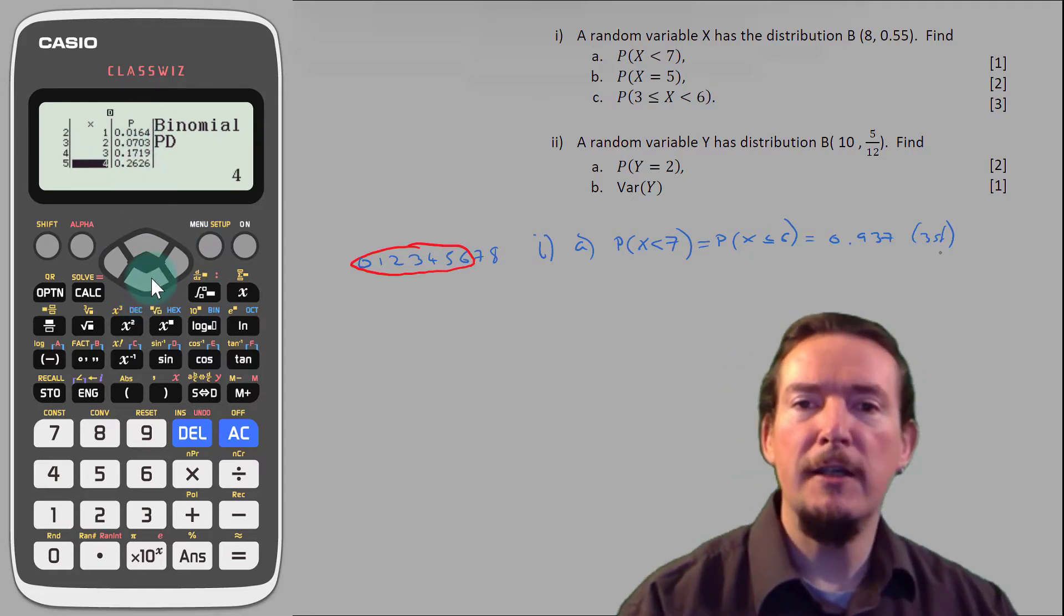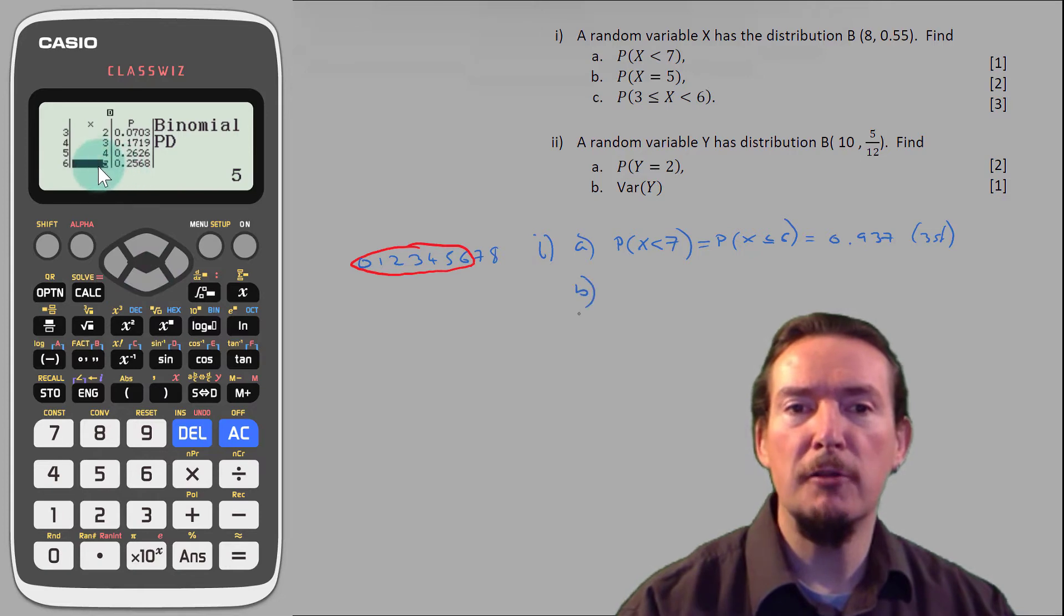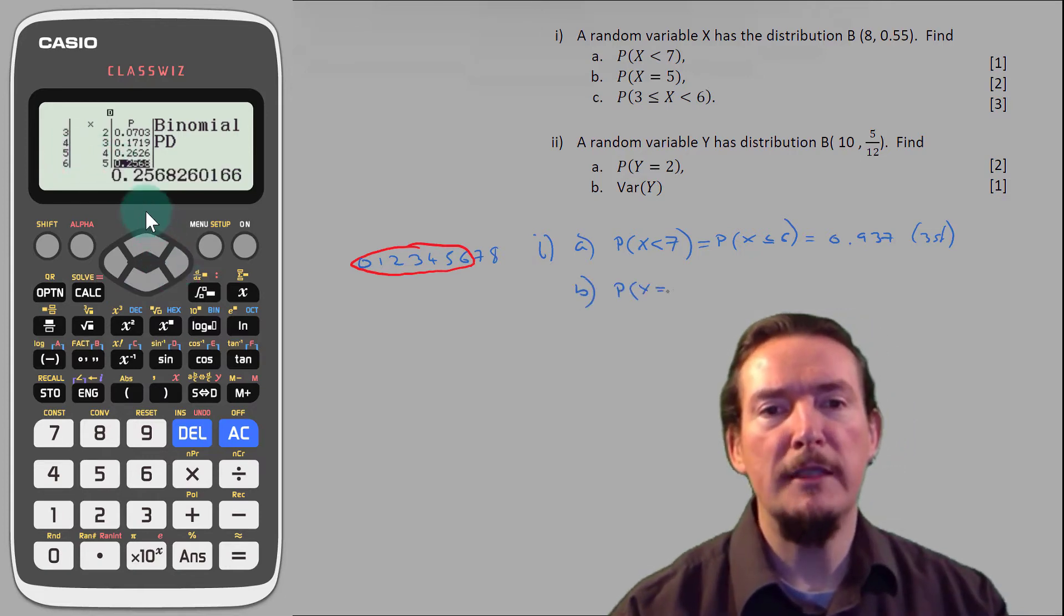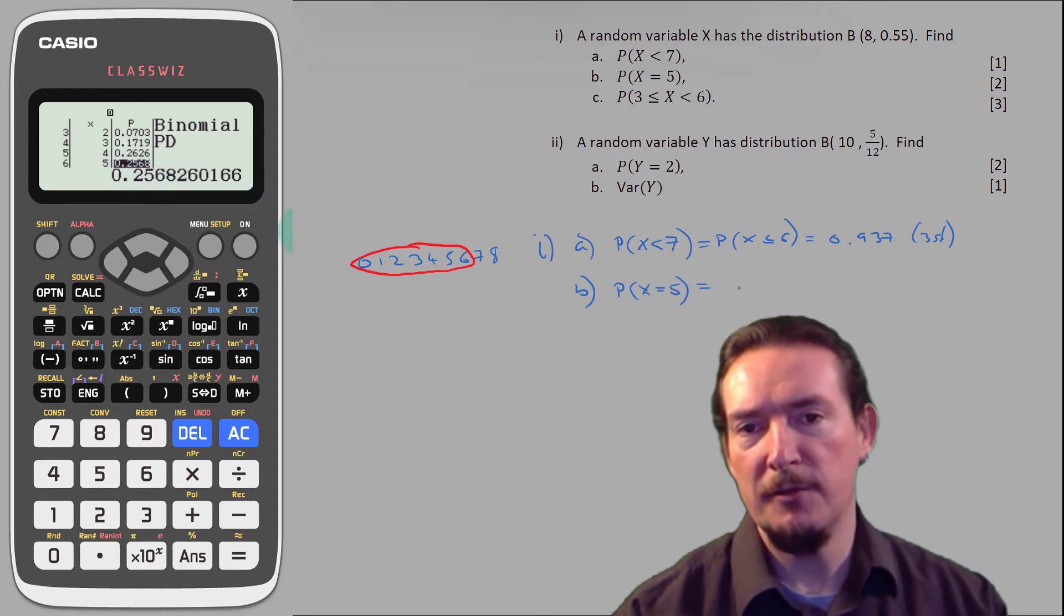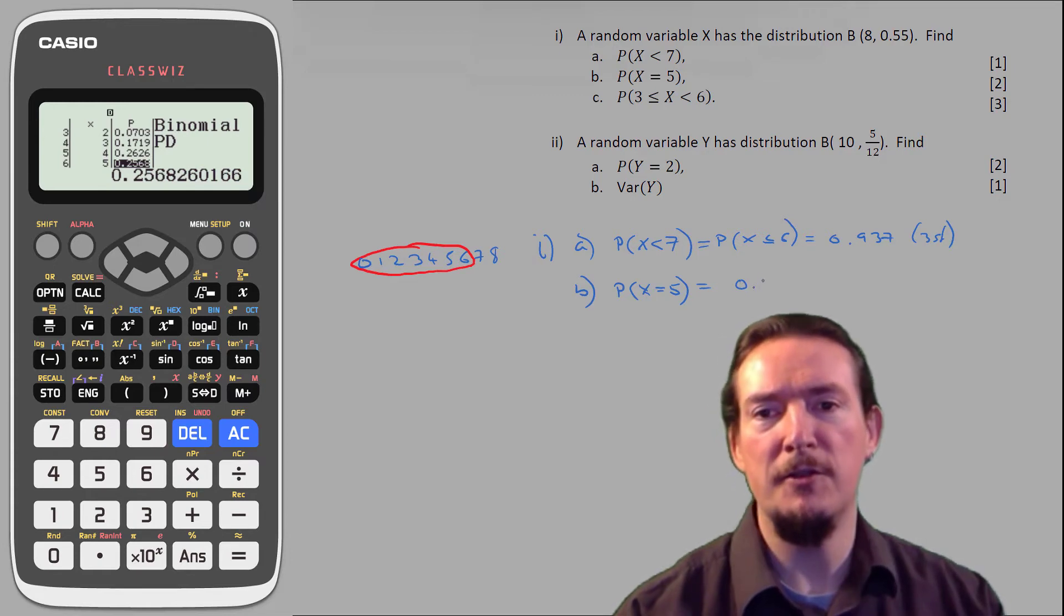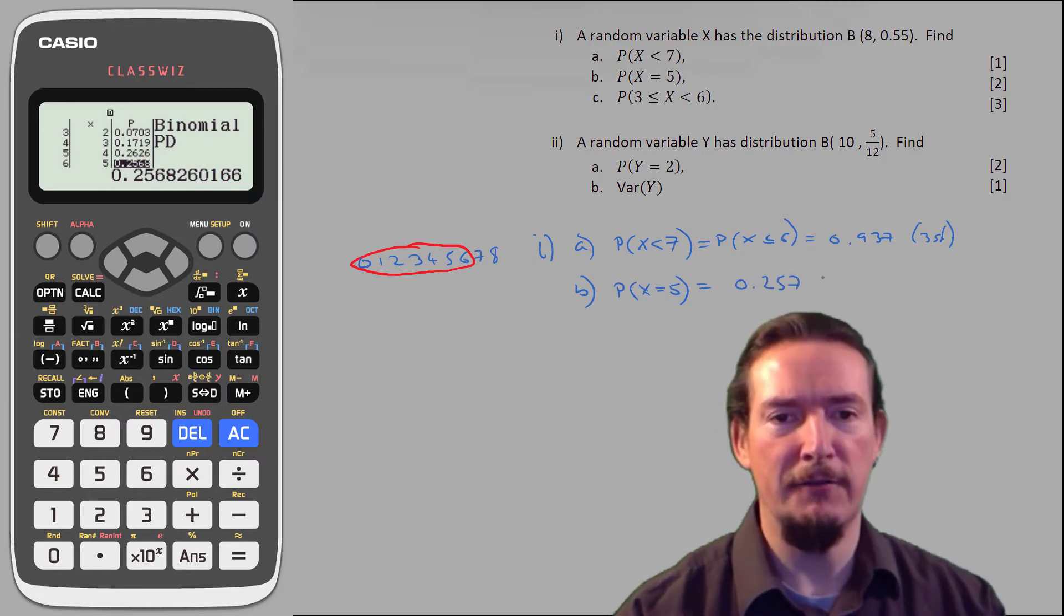Scrolling down to 5, and again, make sure we read across from the value of x and not the row number, we find that the probability that x equals 5 is 0.2568, which will round to 0.257 to three significant figures.